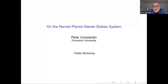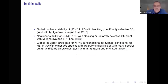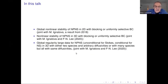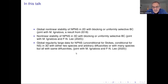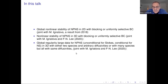I'm going to talk about the Nernst-Planck Navier-Stokes system. This is a semi-linear equation, and I'll discuss three results: global nonlinear stability in 2D with certain boundary conditions, and then the more recent, very recent results — nonlinear stability in 3D with the same kind of boundary conditions, and global regularity for large data in 3D with different or more general boundary conditions.